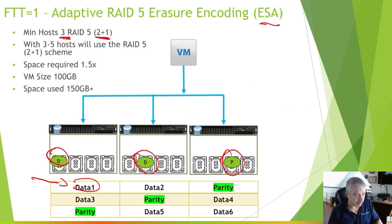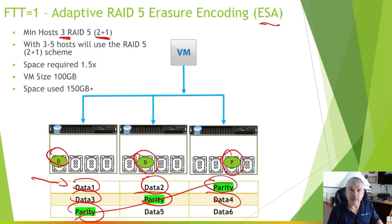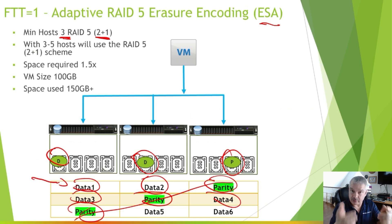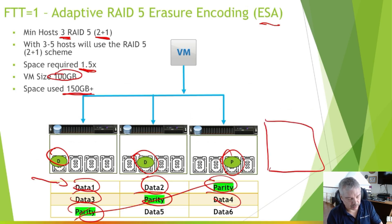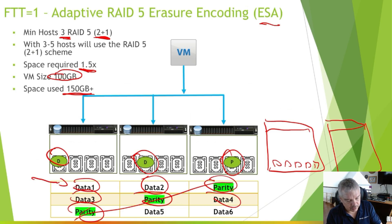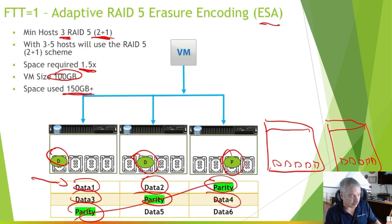With three hosts, it does what's called a 2+1 — two data stripes and one parity. The first stripe will be data, data, then parity; the next stripe will be data, data, then parity again, and we skew the parity just like standard RAID 5, but across just three hosts. The downside is you consume more space — 1.5 times. So that same 100 gig VM would take 150 gigs of storage.